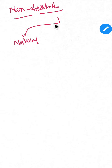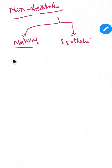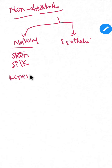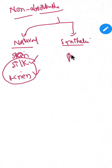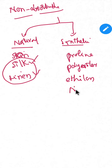Now non-observable sutures also have natural and synthetic types. In natural non-observable sutures we have silk and linen. In synthetic we have prolene, polyester, and nylon. These are the synthetic non-observable sutures.